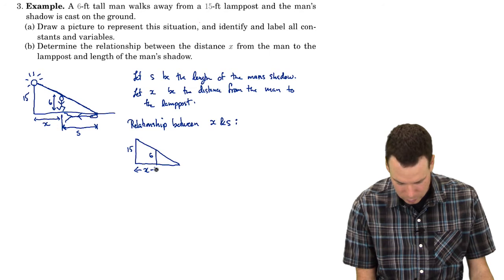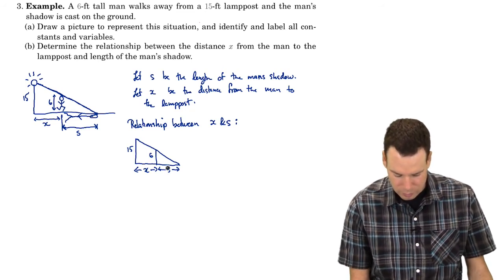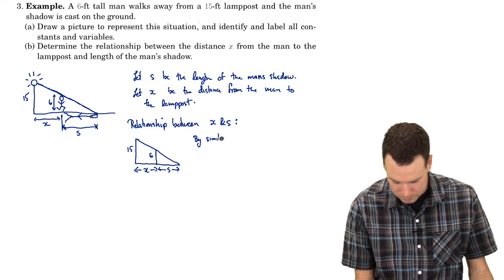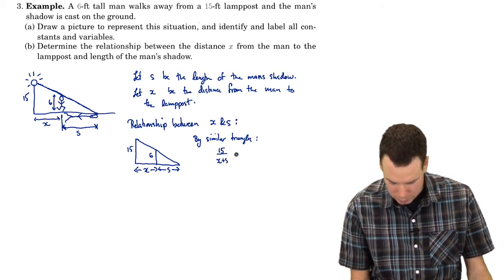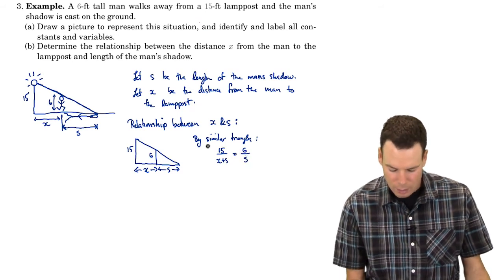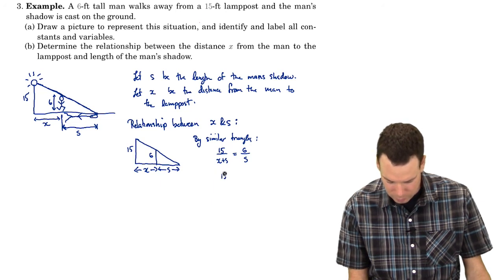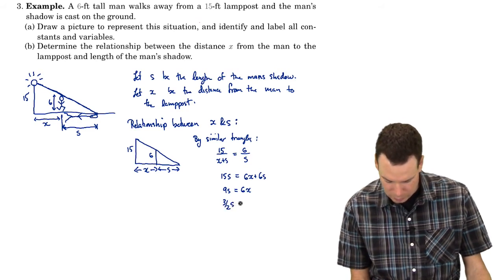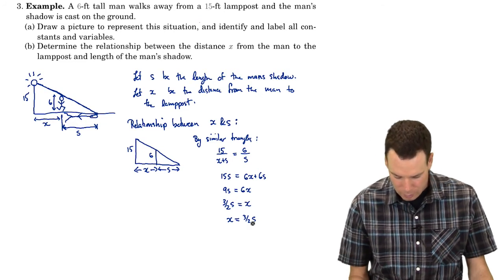Looking at the simplified diagram: that's 15, that's 6, that's x from there to there, and that's S from there to there. We see a pair of similar triangles — a small triangle and a big right triangle. By similar triangles, the height of the big one over its base (x plus S) equals the height of the small one over its base. Simplifying: 15S equals 6x plus 6S, so 9S equals 6x, giving us x equals three-halves S.